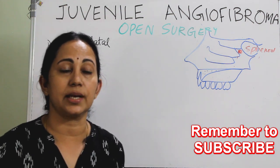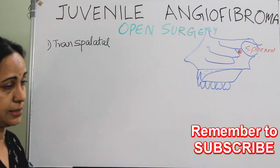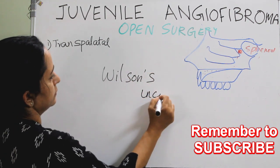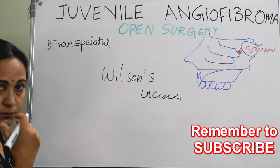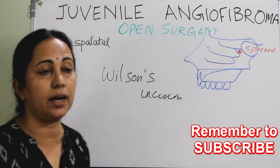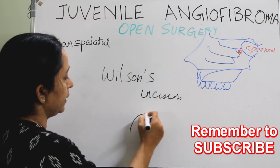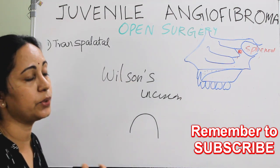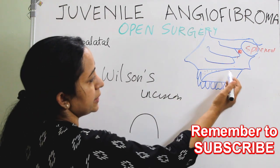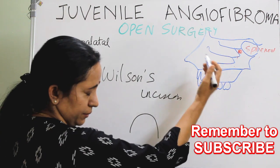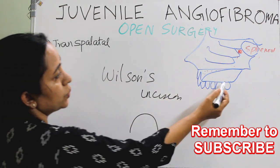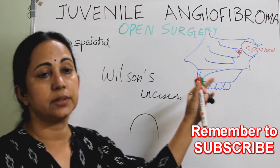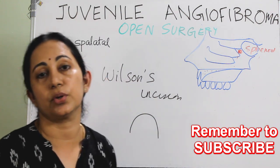In the transpalatal approach, the classical incision is Wilson's incision — a U-shaped incision placed around 2.5 cm anterior to the junction of the hard and soft palate. A submucoperiosteal flap is elevated until you reach the posterior end of the soft palate, and through that you can reach the tumor limited to the nasopharynx with minimal extension to the sphenoid sinus or choana.